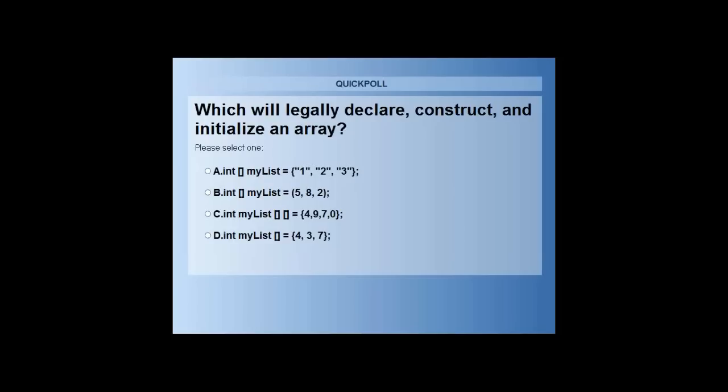Then I have a two-dimensional array with the values 4, 9, 7, 0. Then I have the my list int with the values 4, 3, 7. So what is the correct option and how can one legally construct an array out of these options?